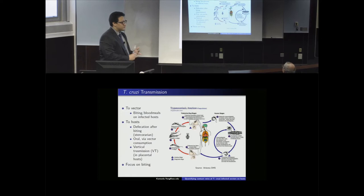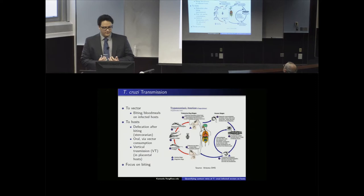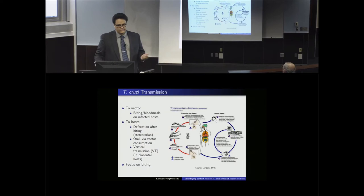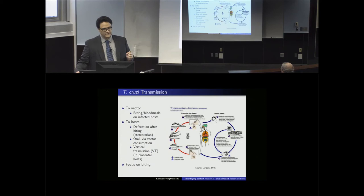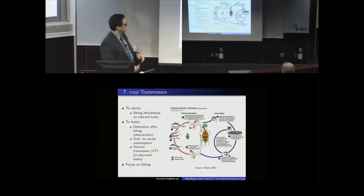T. cruzi is transmitted to vectors when the vector takes a blood meal from an infected host. Hosts can acquire the parasite three ways: vertically from mother to baby, orally by consuming it, or — the method I'm focusing on today — via vector bite. After the bite, the vector defecates next to the bite mark; the host scratches the itch, moving the feces containing the parasite into the wound and causing infection.